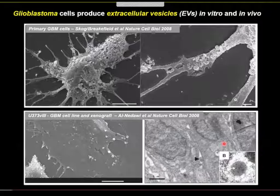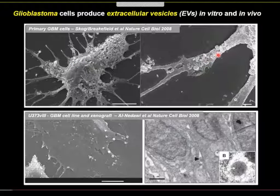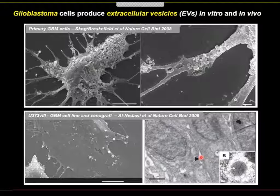In glioblastoma, there is good evidence that glioblastoma cells — both primary cells and long-cultured cells — exhibit structures on their surfaces that give rise to extracellular vesicles. These structures can be found not only in culture but also in tumor cells in vivo. In a xenograft expressing EGF receptor variant 3 oncogene, one can find structures between tumor cells that may represent extracellular vesicles being produced.